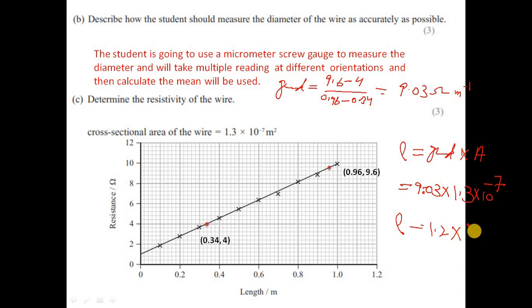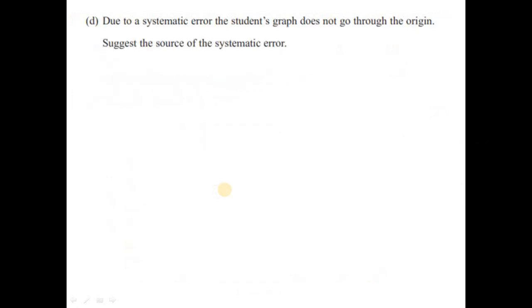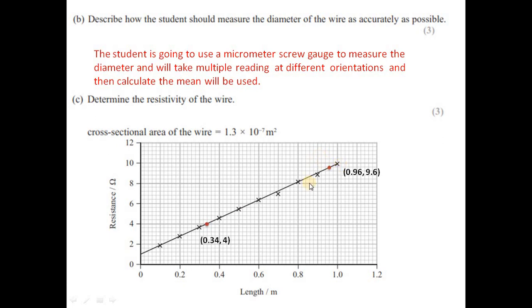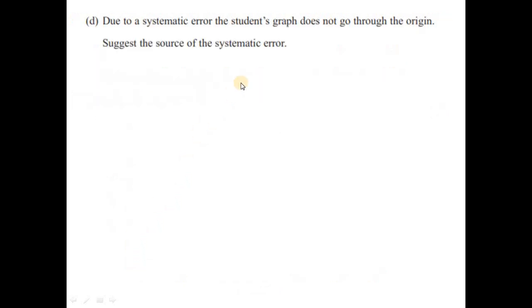Due to a systematic error, the student's graph does not pass through the origin. This indicates some resistance exists even at zero wire length. The reason is that the ohmmeter itself has some internal resistance, and the connecting wires also have resistance that we theoretically ignore but practically cannot — that's why the graph does not pass through the origin.